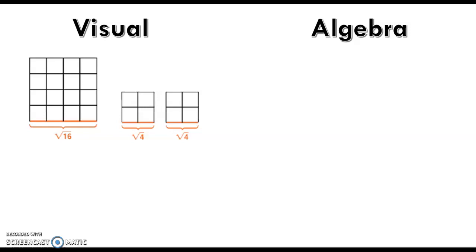First, I want to show you a visual. You can see in this diagram that a square with an area of 16 has a side length of the square root of 16. That's shown in red here — that's the side length, the square root of 16.